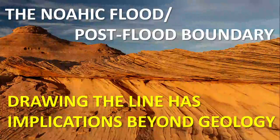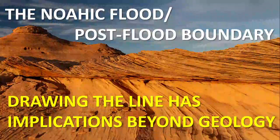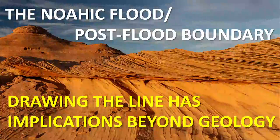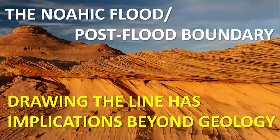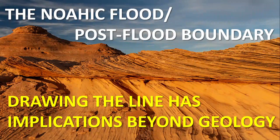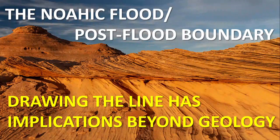Young Earth creationists believe that a large portion of the geological column and the fossils it contains were deposited during a single cataclysmic global flood event that occurred no more than 4,500 years ago. Creationists therefore expect that somewhere in the vertical column of rock and sediment there lies a boundary or transition zone between layers deposited during the global flood and sediments deposited after this event, recording the history of organisms from the flood to the present day.